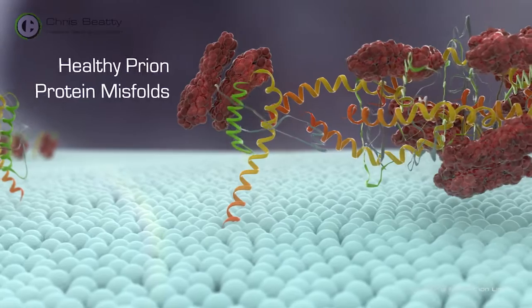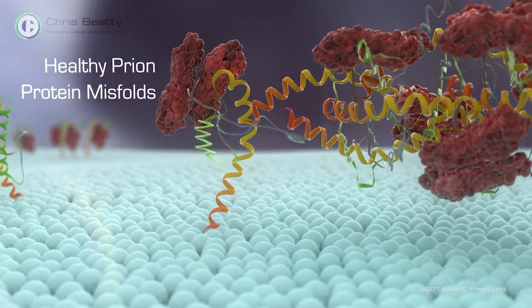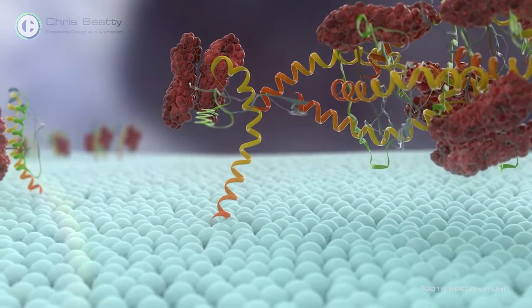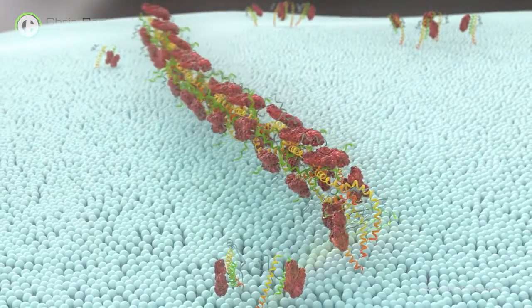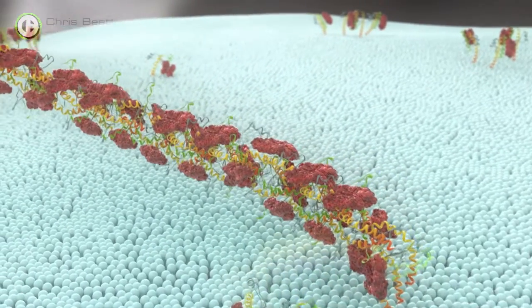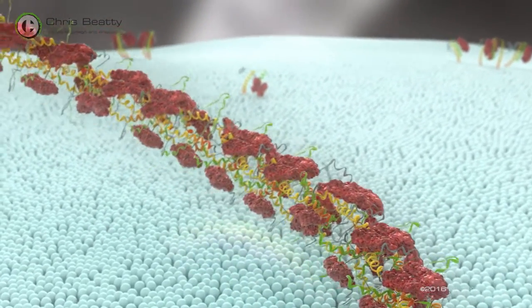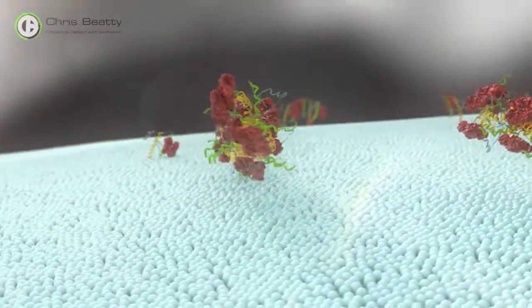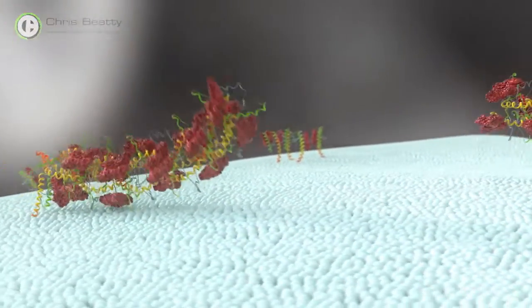These chains grow by attaching more and more normal prion proteins which also become misshapen. The growing rogue prion protein chains tend to break up as they grow thereby producing more chains. These in turn grow and break creating a chain reaction.